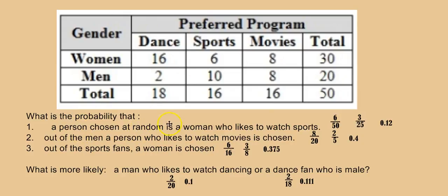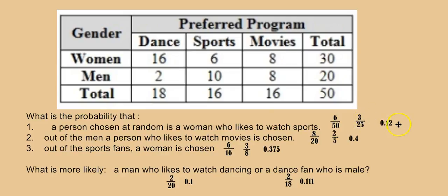Question one: a person chosen at random is a woman who likes to watch sports. 'A person chosen at random' tells us we're looking at all 50 people. There are six women who like sports, so the answer is 6 out of 50. Simplified, that's 3 out of 25, or 0.12 as a decimal.